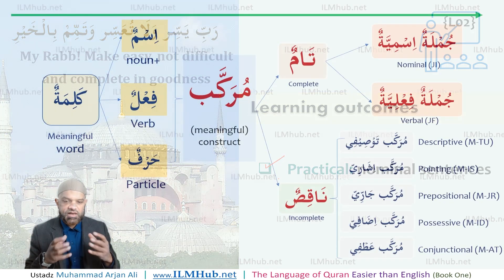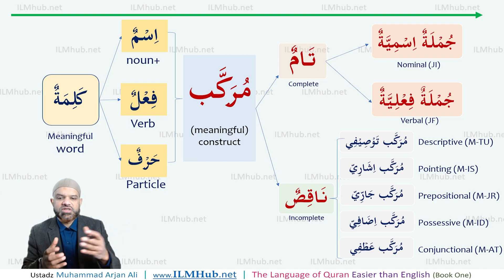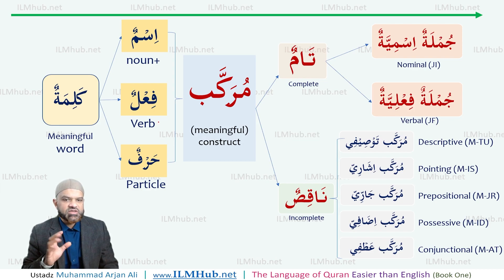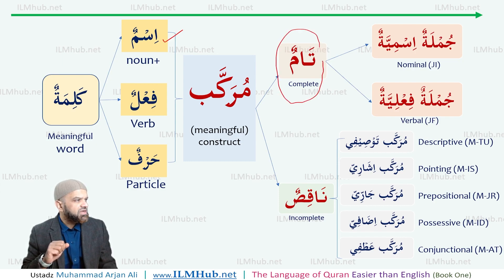Bismillah ar-Rahman ar-Rahim. In the introductory session of mapping Arabic, I took you through the map showing the journey we're going to be following and the key components of Arabic knowledge. You can easily recall that there are only three types of words in Arabic, and they come together to form a construct. We are on lesson two, and we've had a brief look at the four properties of an ism — we've learned two in particular: Iqraab and definiteness. We're going to use that knowledge to start forming complete constructs.